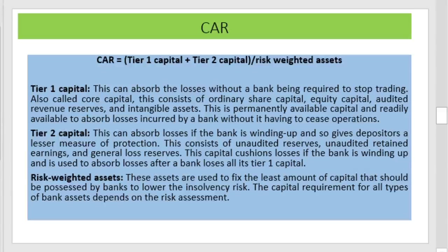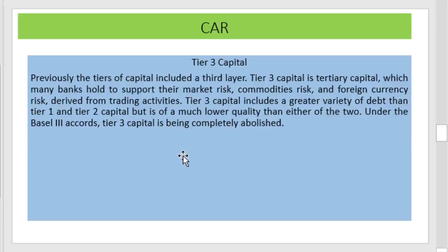The capital requirements for all types of bank assets depend on the risk assessment. In addition, Basel 3 introduced a Tier 3 capital. Tier 3 capital is tertiary capital which many banks hold to support their market risk, commodity risk, and foreign currency risk derived from trading activities. It includes a greater variety of debt than Tier 1 and Tier 2 capital, but is of much lower quality. Under Basel 3, Tier 3 capital is being completely abolished.